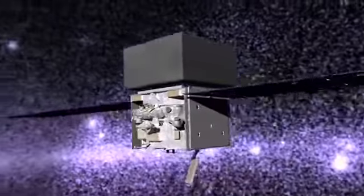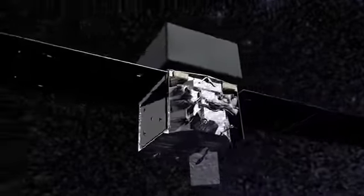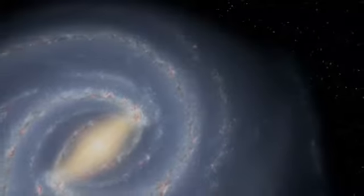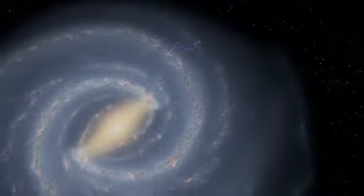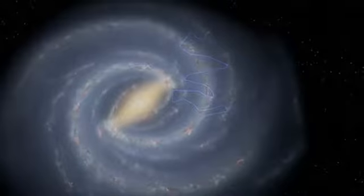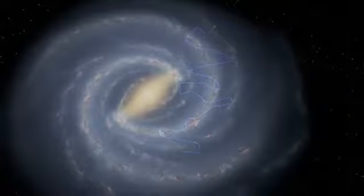Now, observations of two supernova remnants by NASA's Fermi Gamma-ray Space Telescope provide new insights. Because cosmic rays carry electric charge, their direction changes as they travel through magnetic fields. By the time the particles reach us, their paths are completely scrambled. We can't trace them back to their sources.